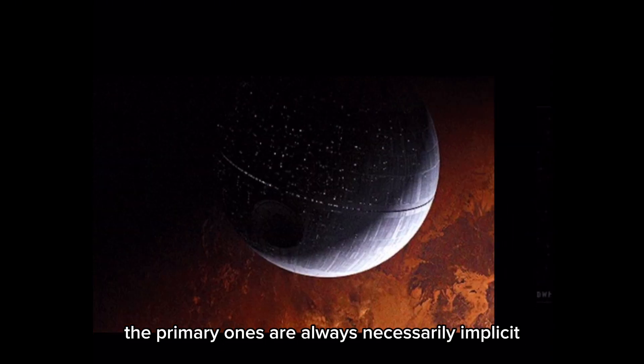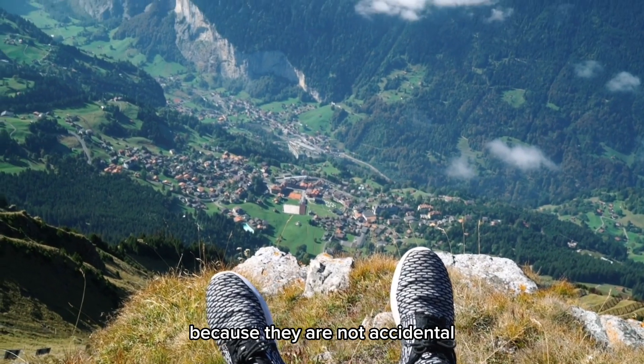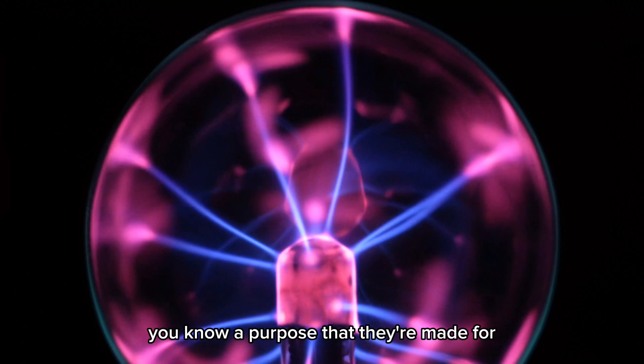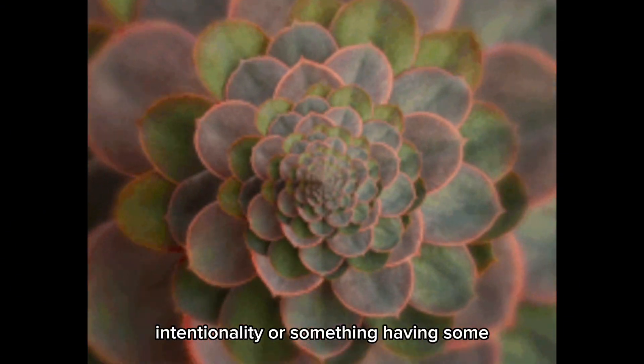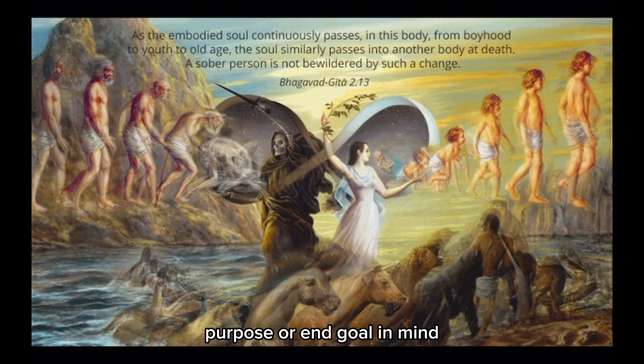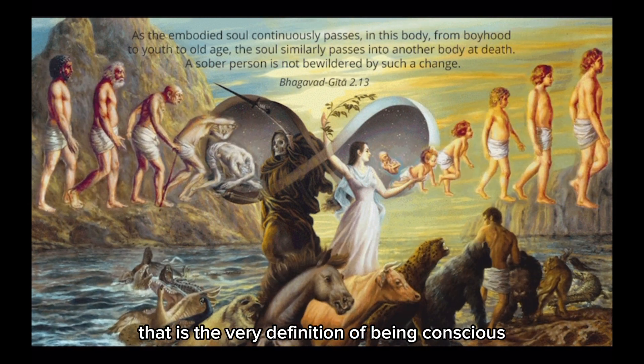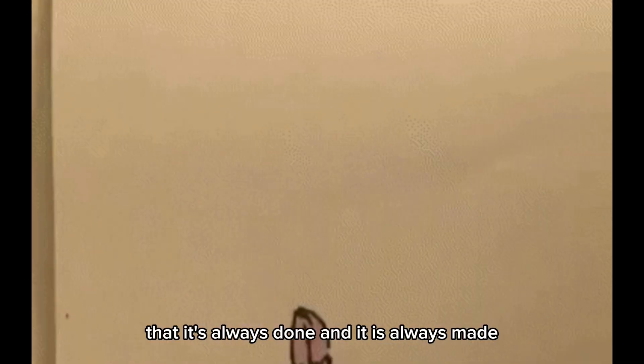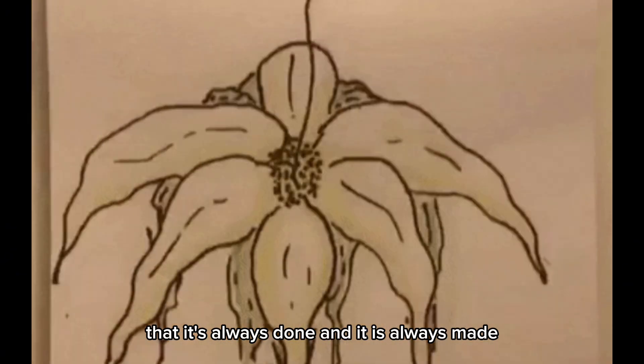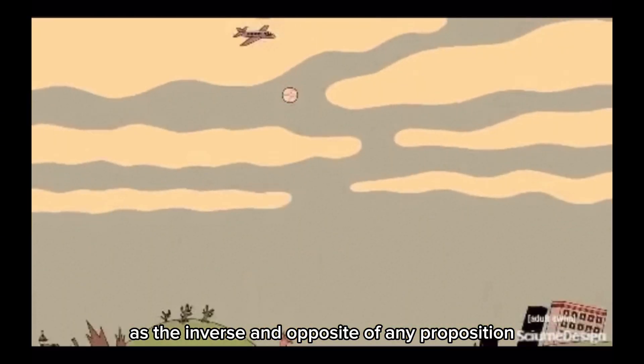Whereas its essential nature, the primary ones, are always necessarily implicit because they are not accidental. It's because there's always a purpose that they're made for. And the reason why we associate implicitness with intentionality or something having some purpose or end goal in mind, a telos, is because that is the very definition of being conscious or rather rationality itself. That it's always done and it is always made as the inverse and opposite of any proposition.